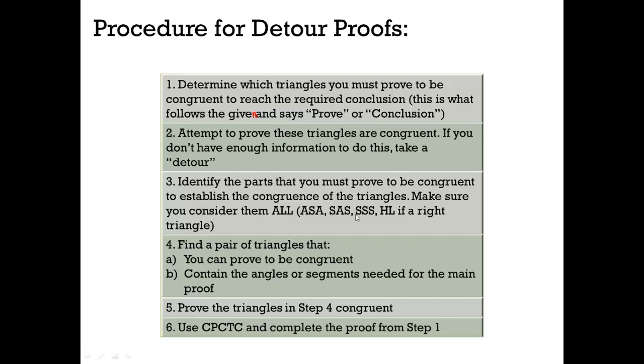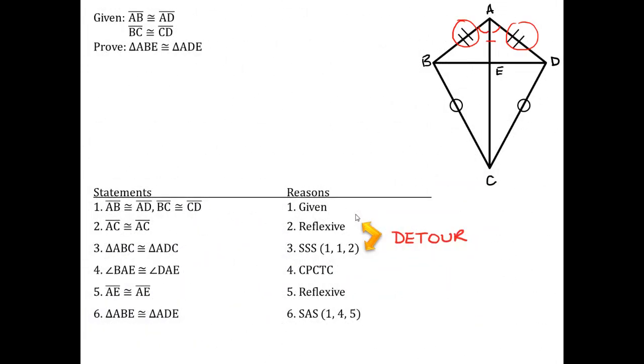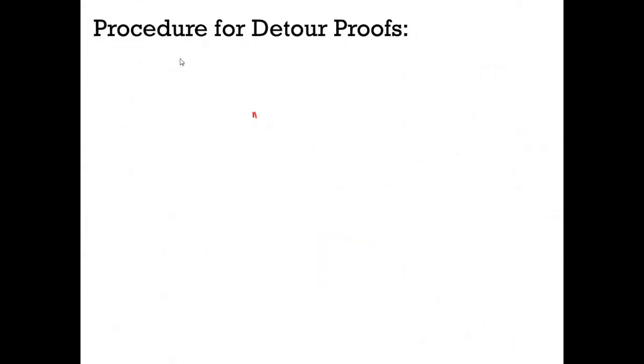Next step, we need to find a pair of triangles that, first, we can prove to be congruent, and second, contain the angles or segments that we need for the main proof. We determined we couldn't prove those. And by proving the larger ones, that had these included angles that helped us out with this one. So we did do that. We didn't explicitly state it, that's all.